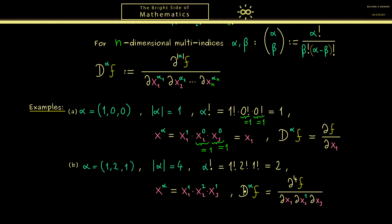This is how we can use the multi-index notation to denote partial derivatives, and it will be very helpful when we write down the Taylor polynomial in several variables. More precisely it will look very similar to the one-dimensional case, which is of course what we want when we generalize formulas. Let's meet in the next video when we talk about the Taylor polynomial in multivariable calculus. Have a nice day and bye.